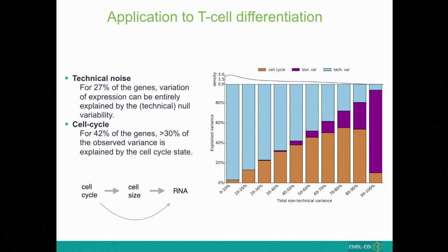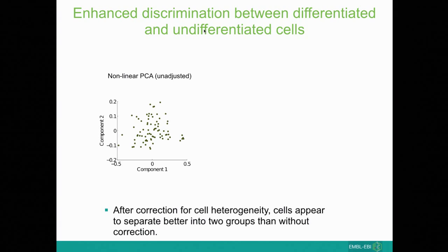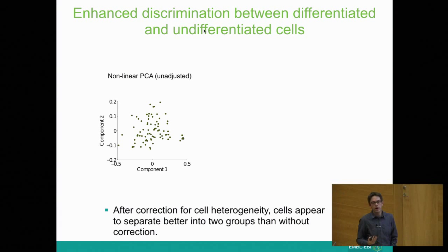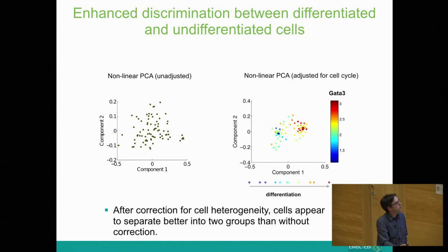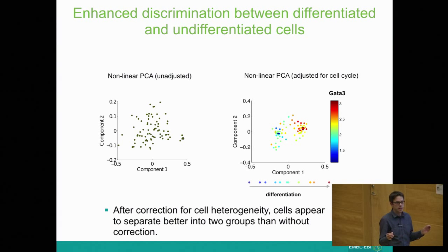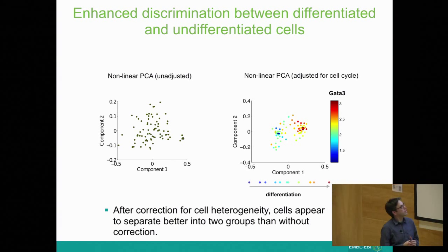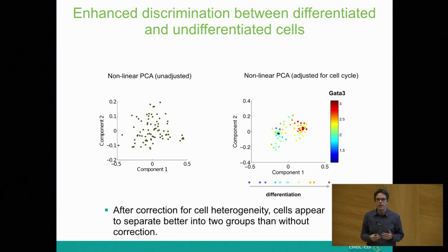This has consequences. When you look at cell subpopulations using a nonlinear PCA — a GPLVM model — on unadjusted data there's no structure visible. But once you account for the cell cycle process, two subpopulations are clearly visible and differentiable. Zooming in, the left population is GATA3-low and the right is GATA3-high, recovering the differentiation dynamics. Not only GATA3 but many canonical T cell differentiation markers are differentially expressed, confirming the model does what it's supposed to do.